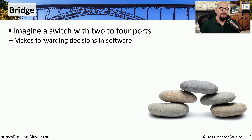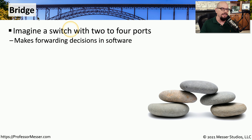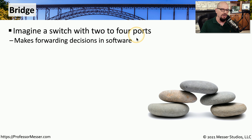Before the advent of switches, we were still able to separate networks and send traffic between them based on destination MAC address. We did that by using a technology called a bridge — think of this as a switch with a limited number of ports, usually two to four ports on a traditional bridge.